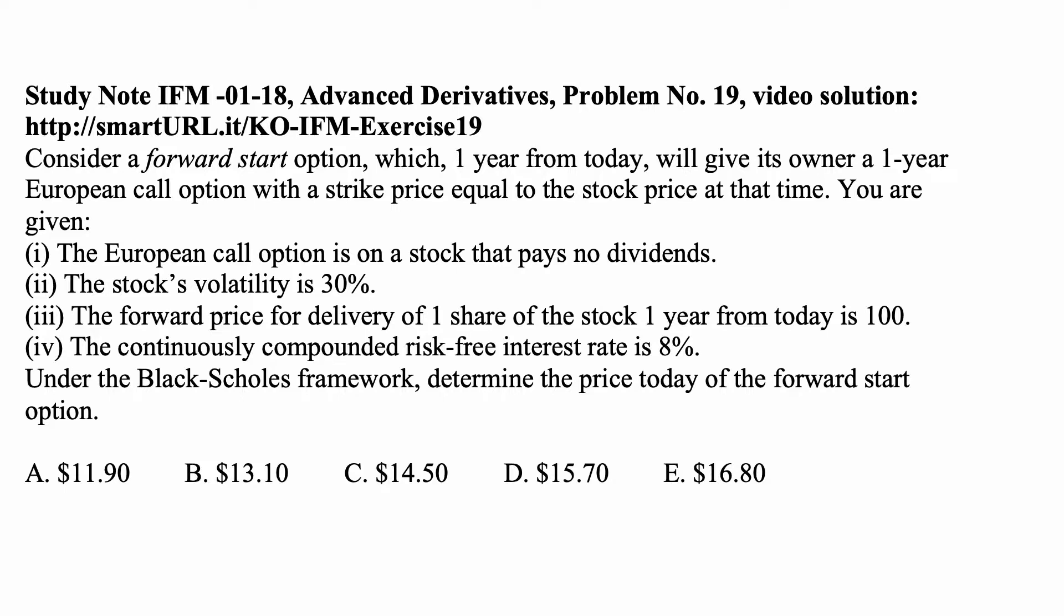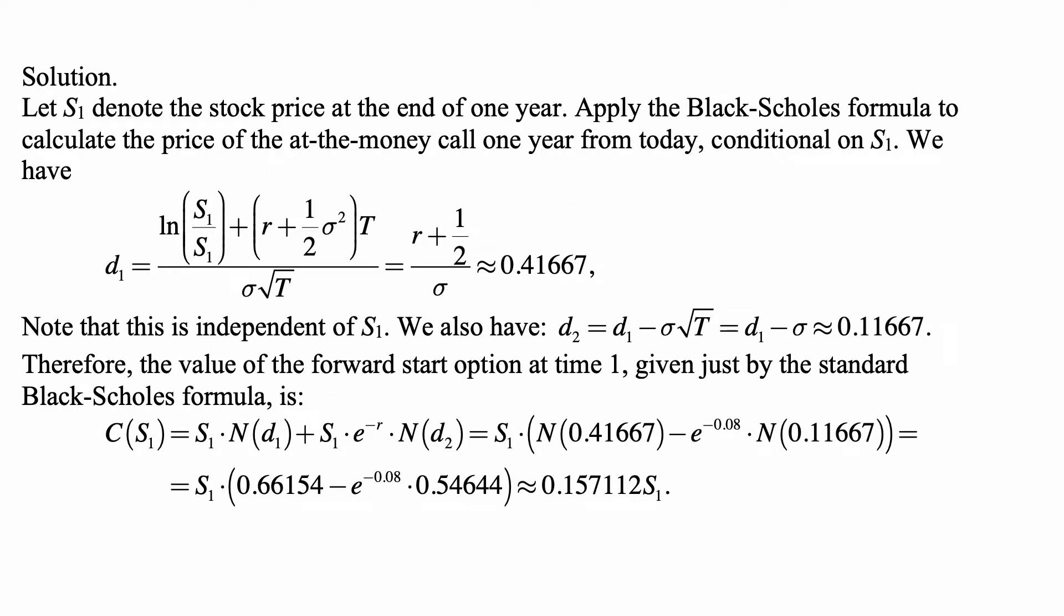The continuously compounded risk-free interest rate is 8%. Under the Black-Scholes framework, determine the price today of the forward start option. Let us write S1 for the stock price at the end of one year. Apply the Black-Scholes formula to calculate the price of the at-the-money call one year from today conditional on S1. At the money means that the exercise price is the same as the price then.